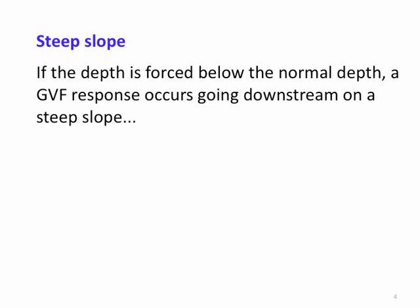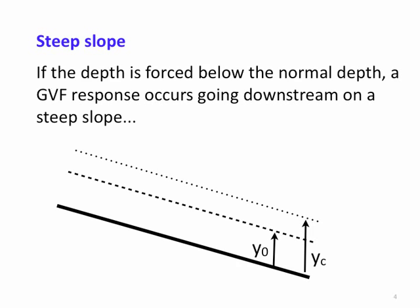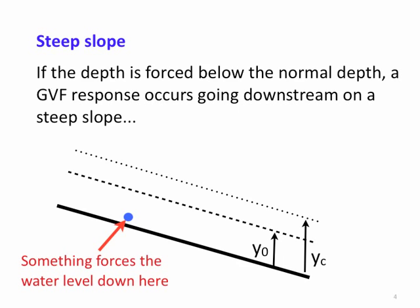On a steep slope, the normal depth is less than the critical depth. If something forces the water level down below the normal depth, we now have a supercritical flow that's shallower than it wants to be. A gradually varying flow response curve exists for this case, and the response is a slow increase in water depth going downstream until normal depth is reached. This is consistent with supercritical flow, which can only adjust in the downstream direction because waves can't propagate upstream.